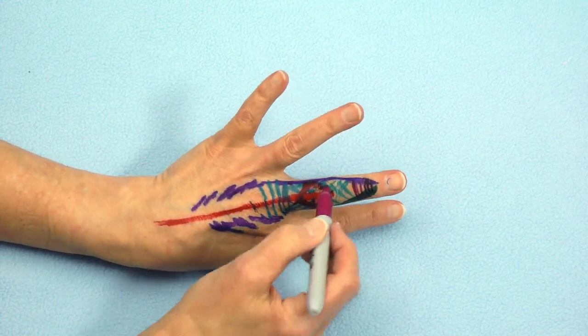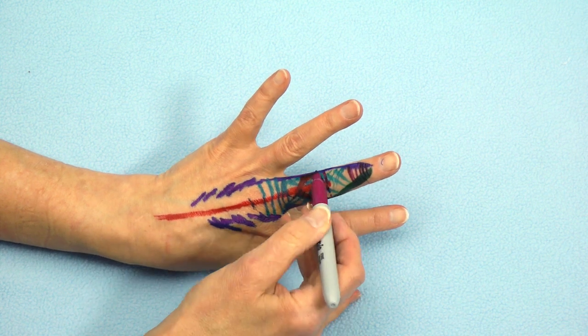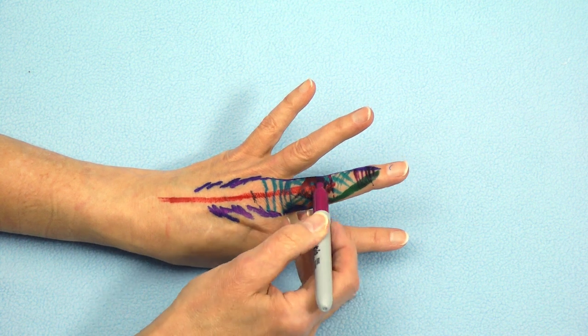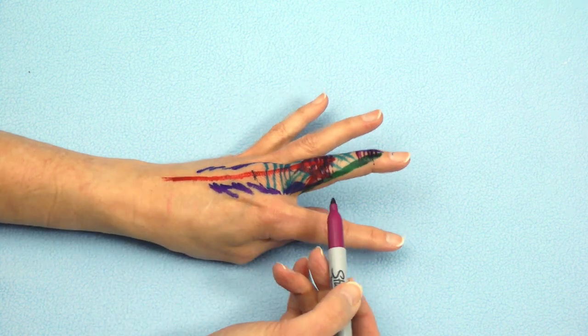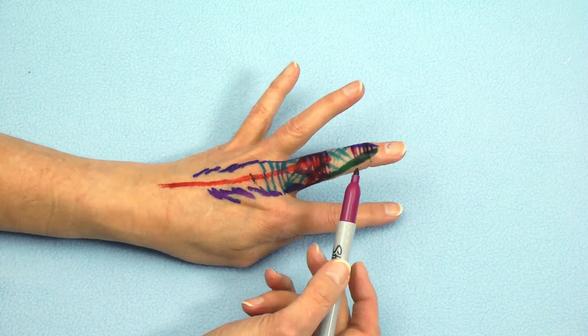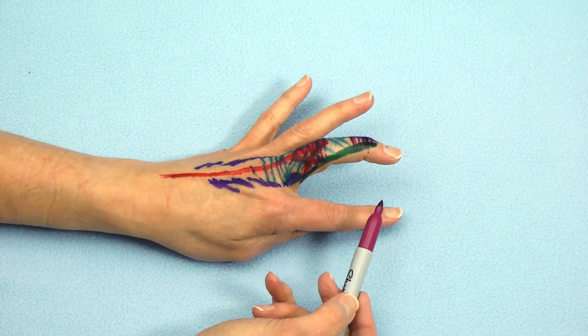There are also fibers surrounding the PIP joint that are called transverse retinacular fibers. They prevent the lateral band moving dorsally or upward, whereas the triangular fibers prevent the lateral band from moving volarly.